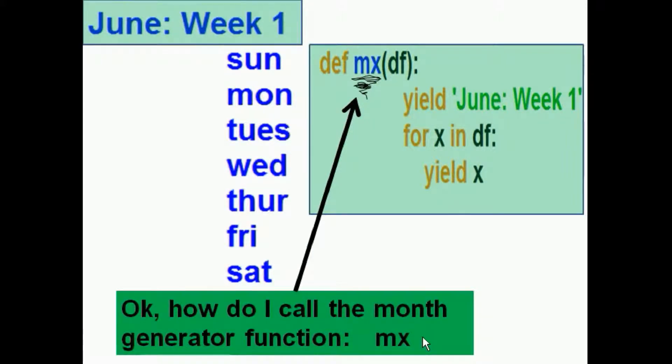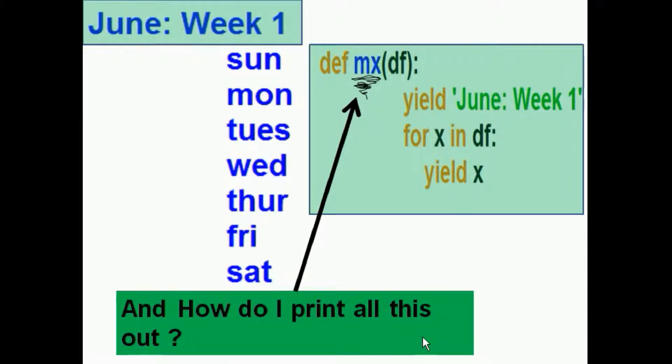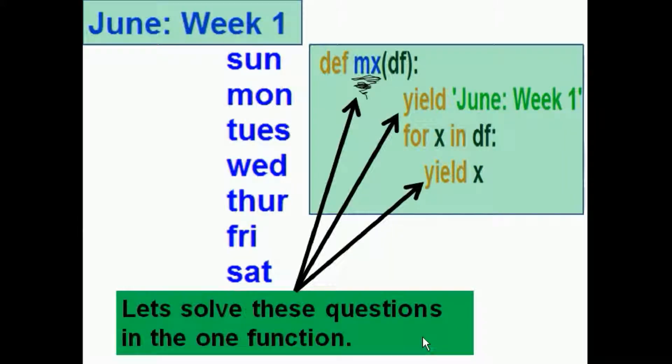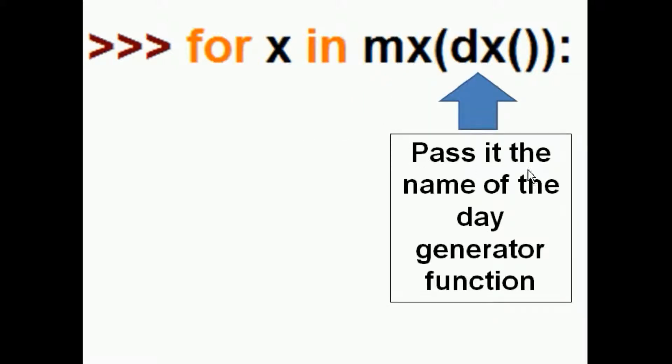Okay, well, how do I call the month generator function MX? And how do I print all this out? I mean, I see lots of yield statements, but no print statements. Let's solve these questions in one function here, by one loop, I should say. For X and MX, well, here's the call to the month generator function. And then I pass it the name of the day generator function, DX, open close friends. That'll get caught in that variable DF.